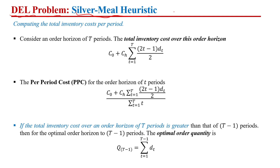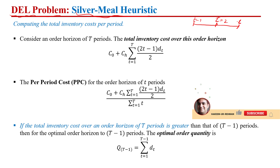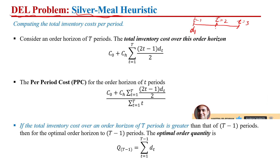So what is the dynamic lot sizing problem? Let's say if we have a planning horizon of three time periods — time period one, time period two, and time period three — and each time period we have a certain demand. So against time period one we have D1, against time period two we have D2, and D3 for time period three.